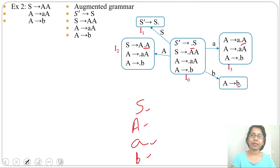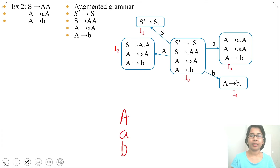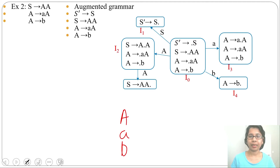I1 is an accepting state, so there will be no transition from I1. Next we check I2. In I2, the dot is before variable A, before terminal a, and before terminal b, so there will be three transitions: for A, for terminal a, for terminal b. From state I2 by variable A it goes to a new state with production S → AA•.